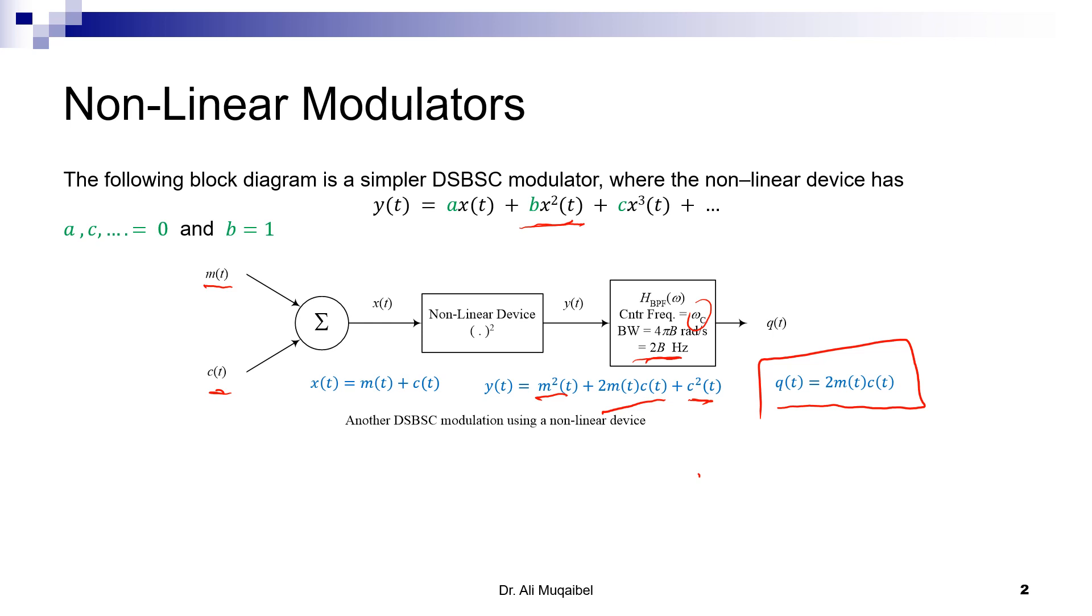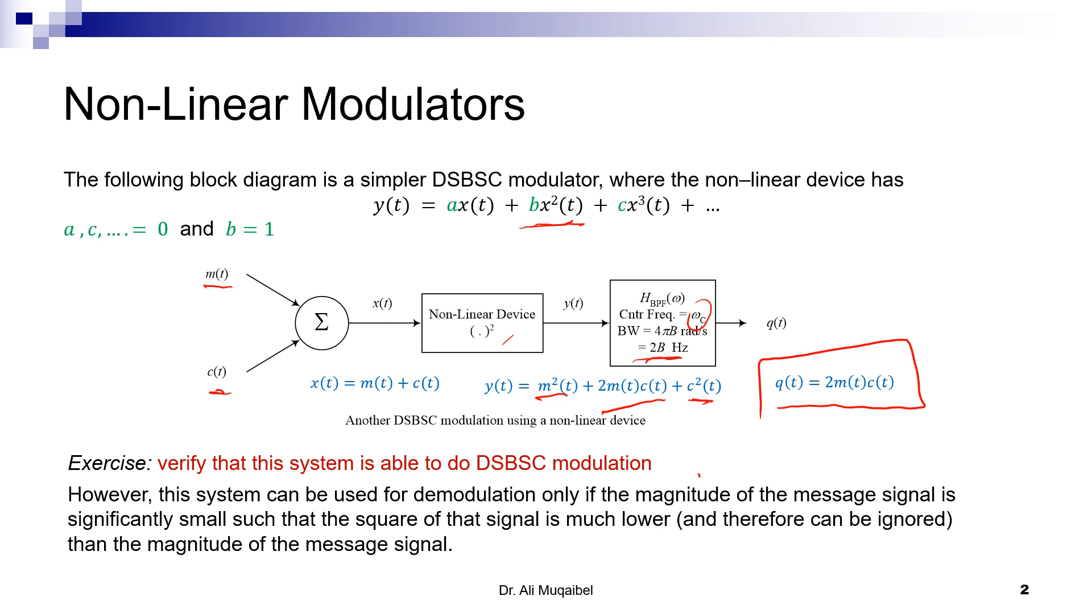As an exercise, I leave it for you to verify that this system is able to do double-sideband suppressed-carrier modulation, but it cannot be used for demodulation unless there's some condition. So I leave you to practice what happens if we start here for demodulation—with M(t)·C(t), then we have the carrier, we get the square, and so on.